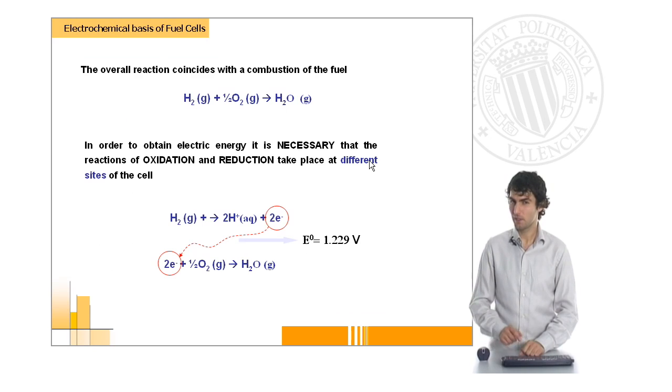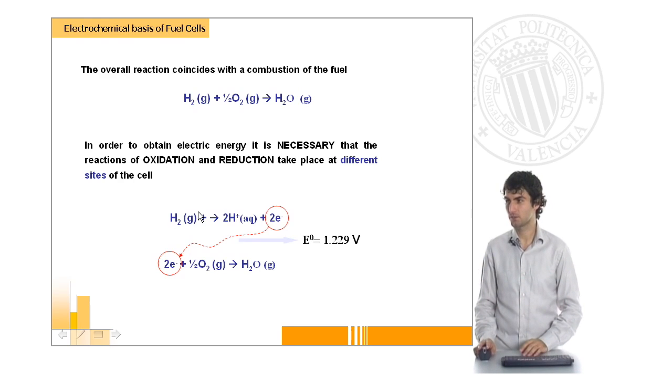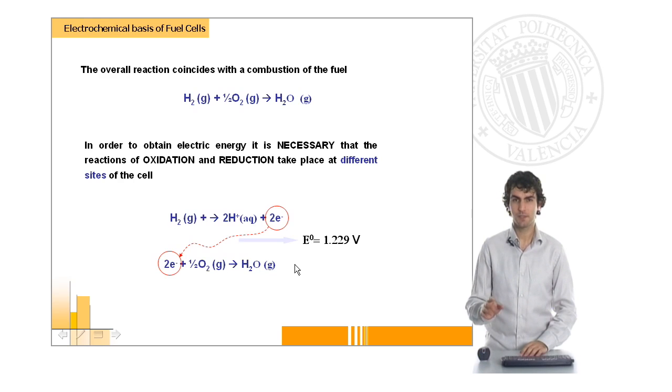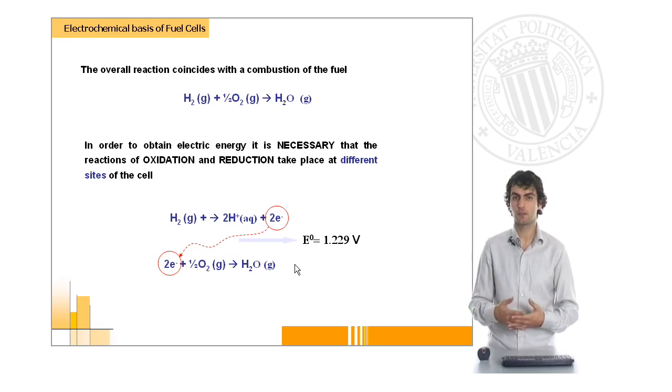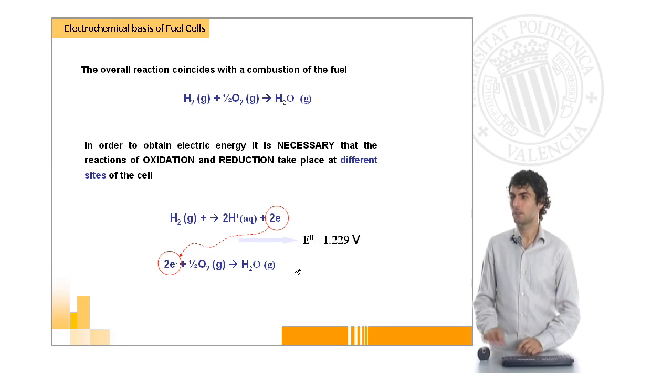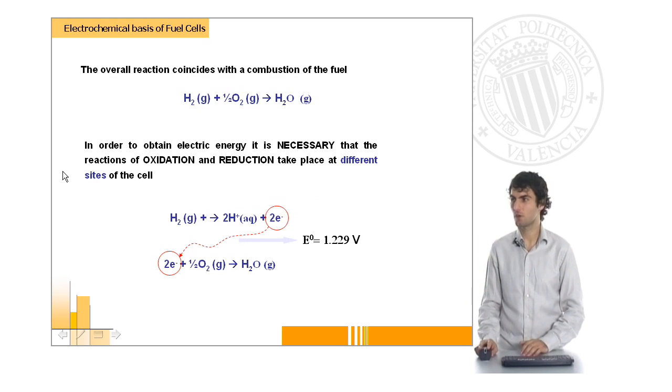But if there is something I would like to make clear in this presentation, it is that for a fuel cell to act as an electrochemical system with high efficiency, it is necessary that these two reactions, oxidation and reduction, take place separately in different sides of the cell. Otherwise, we will have a common combustion reaction and thermal energy instead of electrical energy as we want. This is a key point that we will be studying in another presentation of this course.